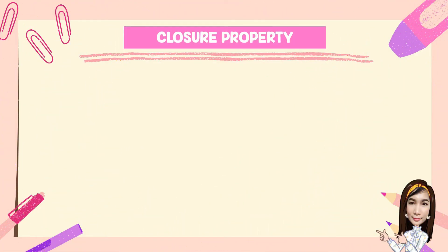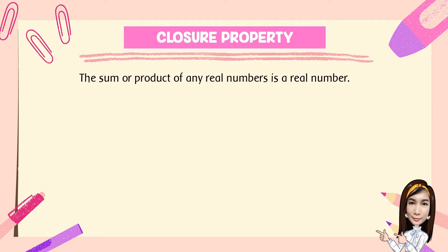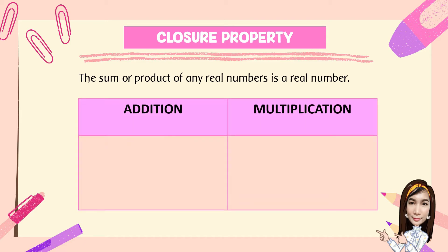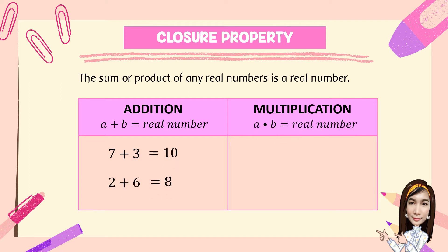First, we have the closure property. The sum or product of any real numbers is a real number. For addition, a plus b is equal to a real number. For multiplication, a times b is equal to a real number.